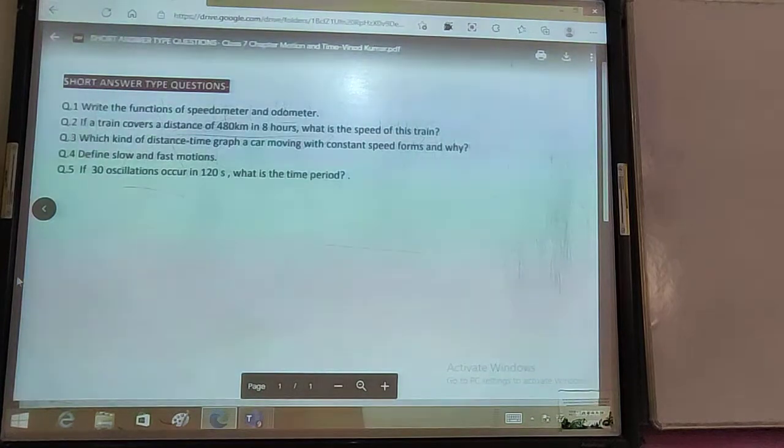Now the second question: if a train covers a distance of 480 meters in 8 hours, what is the speed of this train? So distance upon time, 480 upon 8, which is 60. Probably the simplest question.